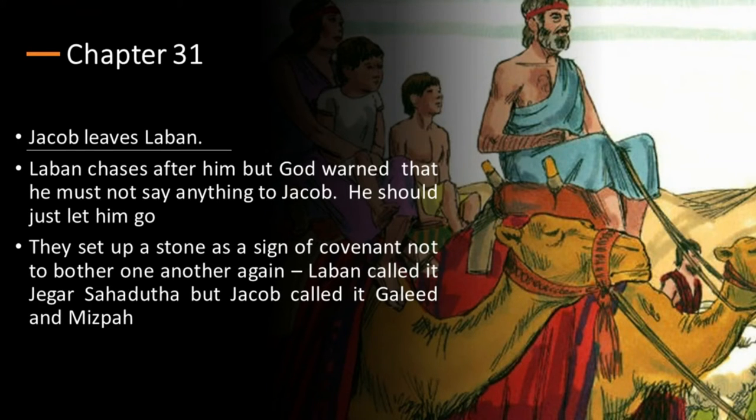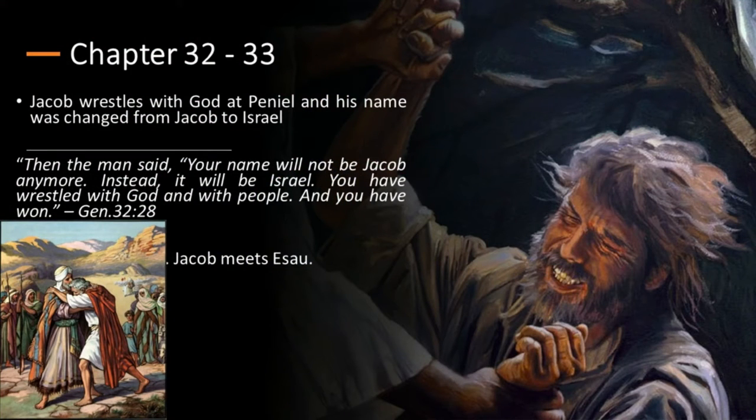In chapters 32 and 33, Jacob prepares to meet his brother Esau. Because of the circumstances surrounding their separation, he was not sure how Esau would receive him, so he sent gifts ahead. Later in that chapter, Jacob wrestled with an angel, and his name was changed from Jacob to Israel. In verse 28, the Bible says, 'Your name will no more be called Jacob — instead you shall be Israel, because you have wrestled with God and with people and you have won.' In chapter 33, he met Esau, who embraced him and initially did not accept the gifts, but eventually accepted them.